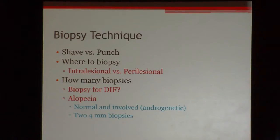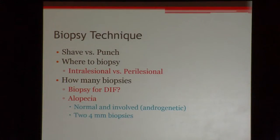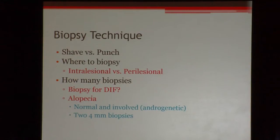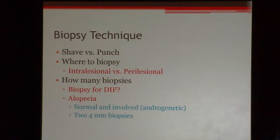For alopecia biopsies, I often receive two-millimeter punch biopsies, but you need at least two four-millimeter punch biopsies to evaluate alopecia properly. You look at two planes of section — vertical and horizontal cross-section — to examine the hairs. For androgenetic causes, take a biopsy in the involved area and the uninvolved area to compare. That comparison is one of the major diagnostic features of androgenetic alopecia. Don't forget to take additional biopsies for DIF when needed.